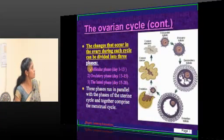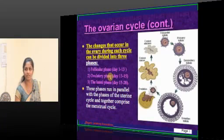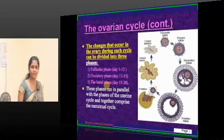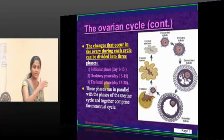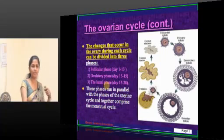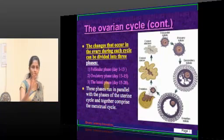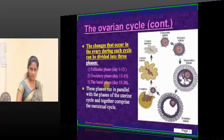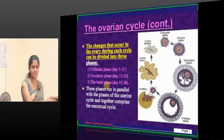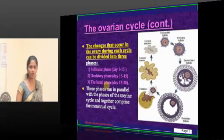For the ovarian cycle, we have three phases: the follicular phase, the ovulatory phase in between, and the luteal phase. In a 28-day cycle, the follicular phase lasts from day 1 to approximately day 13. The fourteenth day is the day of ovulation. From day 15 to 28 is the luteal phase — approximately 14 days in front and 14 days behind.